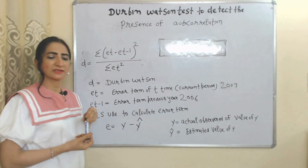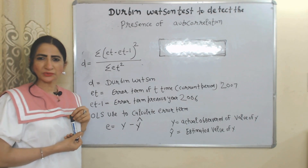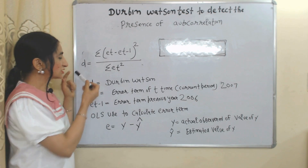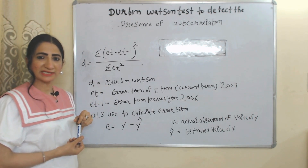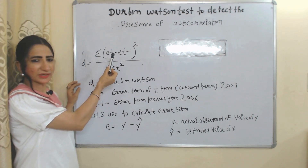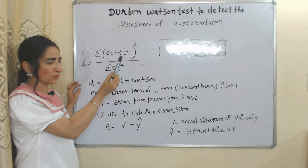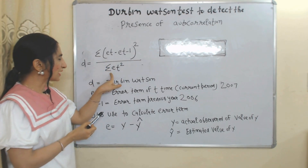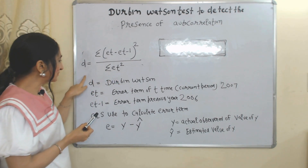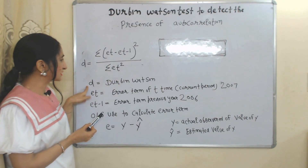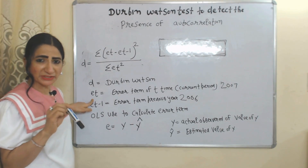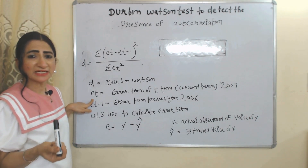That's why autocorrelation is a problem and we must detect it. The Durbin-Watson test is used to detect the presence of autocorrelation. The formula is: d equals the summation of the whole square of (e_t minus e_{t-1}), divided by the summation of e_t squared. Here, d represents the Durbin-Watson statistic and e_t represents the error term of time period t.